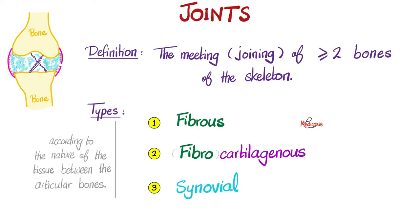Joints — the definition: the meeting or joining of two or more bones of the skeleton. Types of joints are classified according to the nature of the tissue between the articular bones. We have three types: fibrous joints, fibrocartilaginous joints (or simply cartilaginous joints), and synovial joints. Fibrous joints permit no movement; cartilaginous joints give you limited movement; and synovial joints give you the widest range of movement.